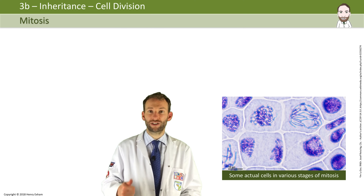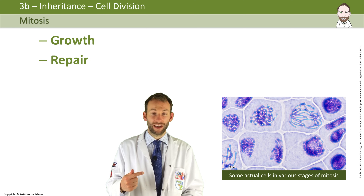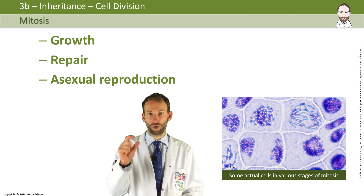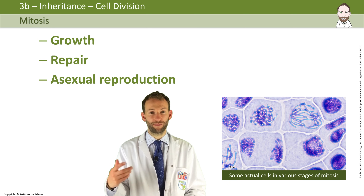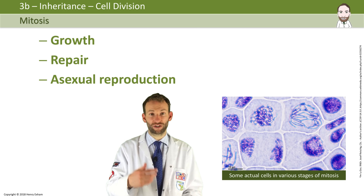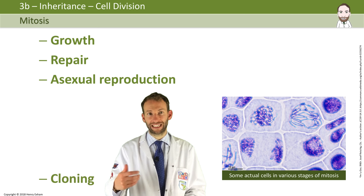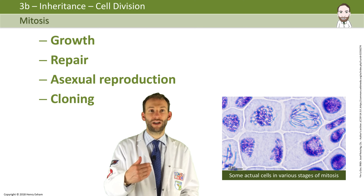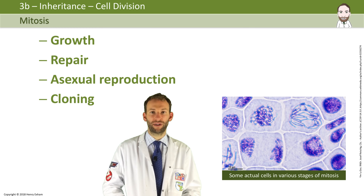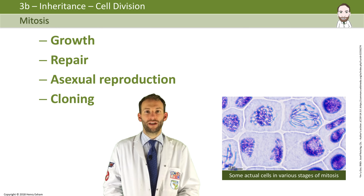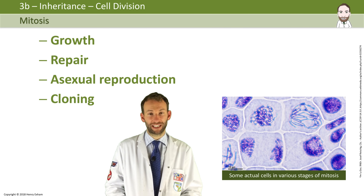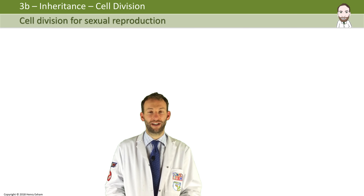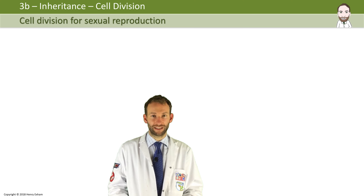Mitosis is used for growth and repair. It's also asexual reproduction, because you've got one parent cell becoming two identical daughter cells. This is how things like bacteria that do asexual reproduction divide their cells. It's also technically cloning, because you're making genetically identical copies of a cell. Some simple organisms like bacteria, fungi, and some plants can reproduce by splitting in two by mitosis.